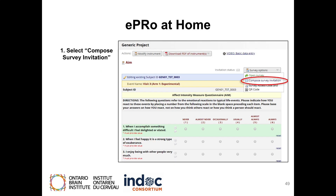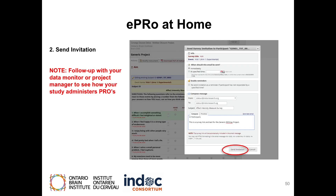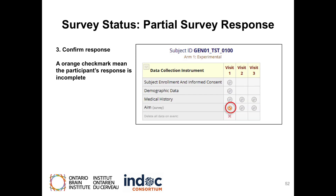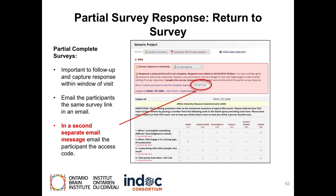For patients who will complete an EPRO at home, first select Compose Survey Invitation from the Survey Options menu. Step 2: Send Invitation. Note — follow up with your data monitor or project manager to see how your study administers EPROs. Step 3 is to confirm the response. A green check mark means the participant has fully completed their survey. An orange check mark means the participant's response is incomplete — it is important to follow up and capture the response within the window of the visit. If a participant has not completed their survey, email the participant the same survey link, and in a second separate email, send the participant the access code.